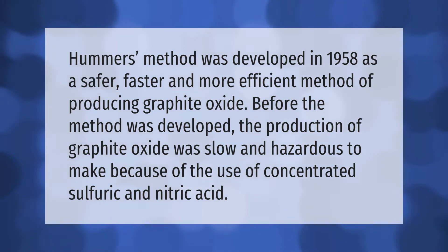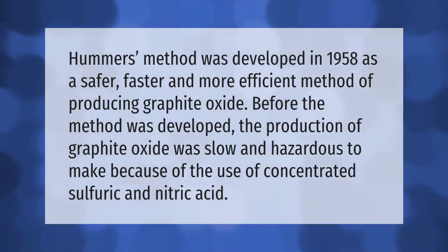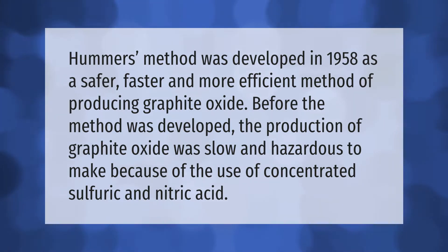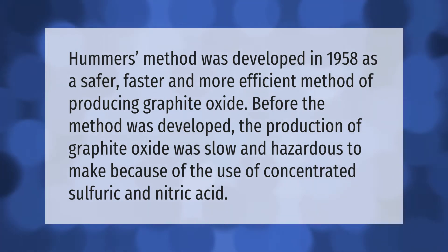Hummer's method was developed in 1958 as a safer, faster, and more efficient method of producing graphite oxide. Before the method was developed, the production of graphite oxide was slow and hazardous due to the use of concentrated sulfuric and nitric acid.